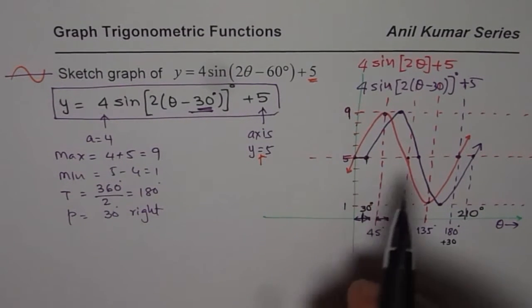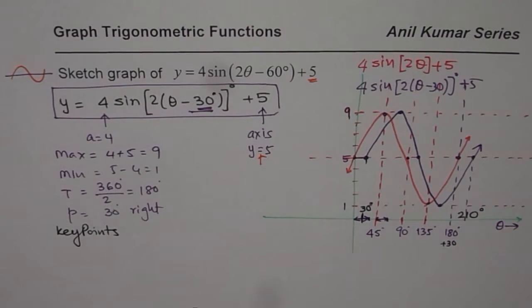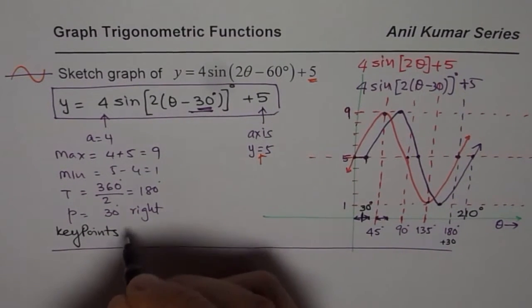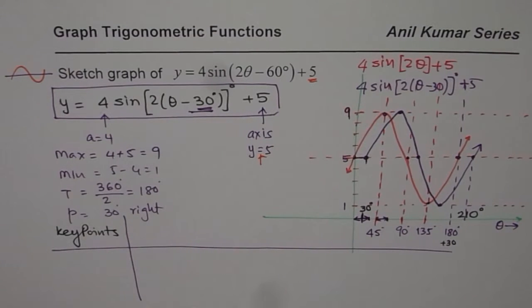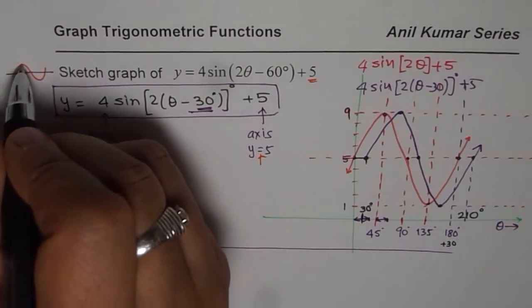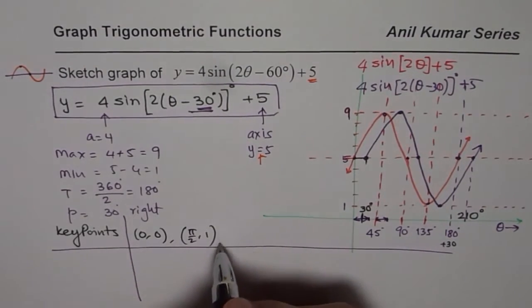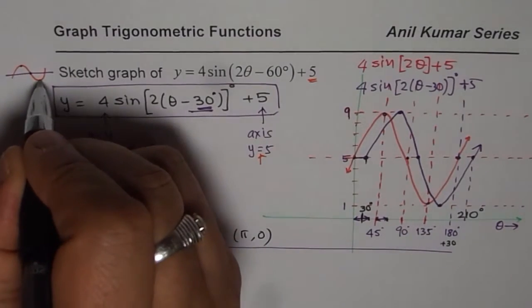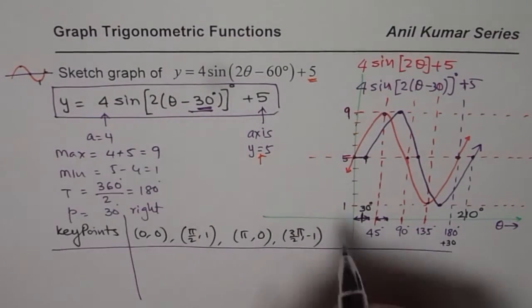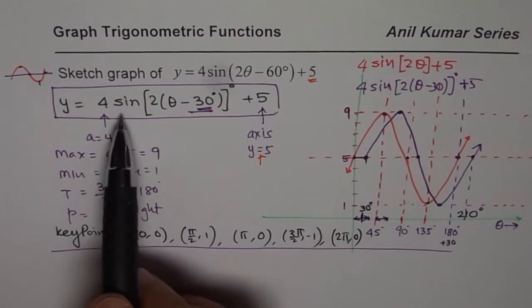There are many other ways to do it. One is you can take key points. I always give you key points so that some of you who really want to sketch with the help of key points can do it. Key points for sine graph: there's zero zero, then this maximum is at pi by two so pi by two one, then at pi you have zero, at three pi by two minus one, and at two pi you again have zero.